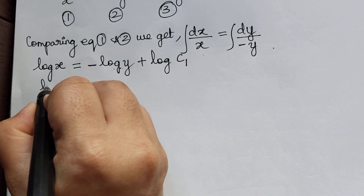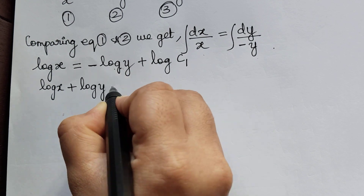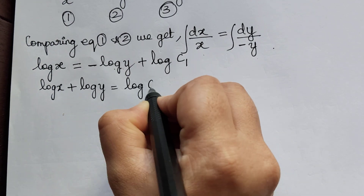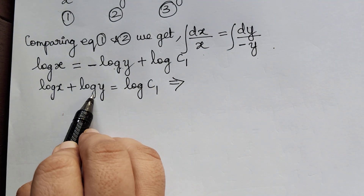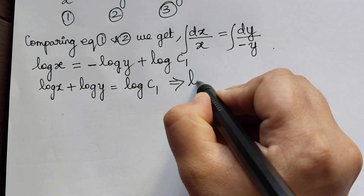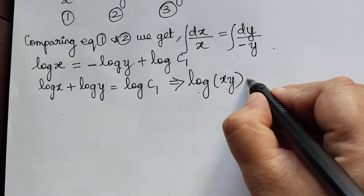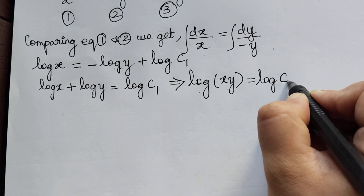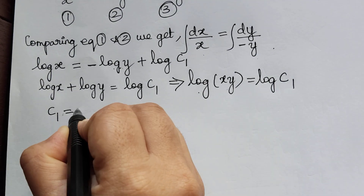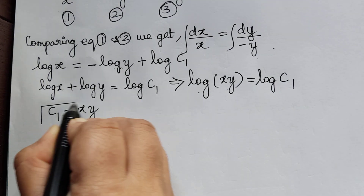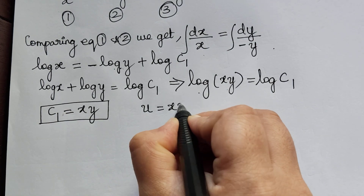Since we have logarithm for both functions, we take the constant as log c1. Taking terms to the left, we get log x plus log y equal to log c1. Using the rule log a plus log b equals log ab, we get log xy equals log c1, so c1 equals xy. This is the first solution: u equals xy.